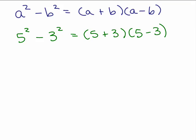Let's use numbers to see that this actually is true for some specific numbers. If we have 5 squared minus 3 squared, according to the formula, that would be 5 plus 3 times 5 minus 3.